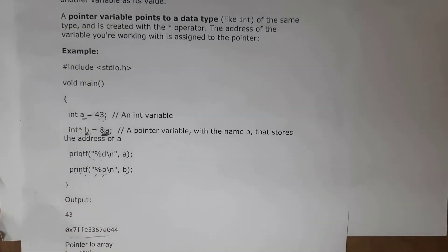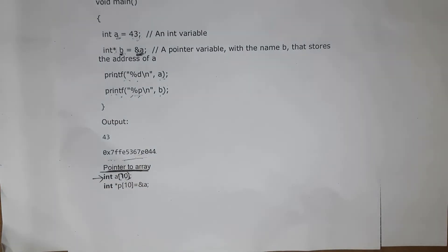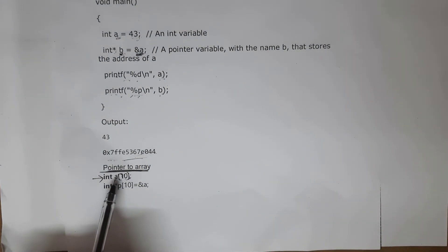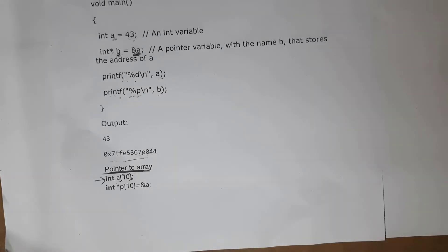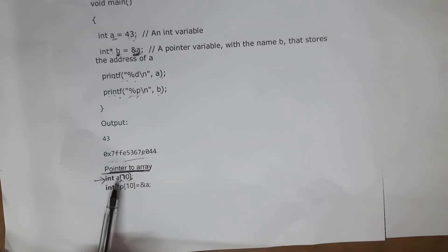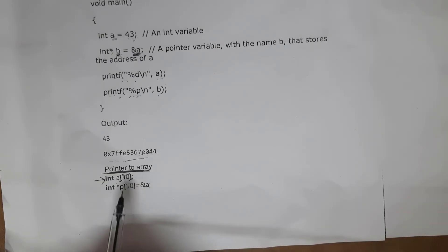We can also create a pointer to an array. For example, I wrote int a[10] — as we know, we create an array using square brackets, and inside I gave array size as 10. Now we need to create a pointer to store the address of this array a, so I wrote int *p[10] = &a. Here * represents pointer, and this pointer p will store the address of array a.